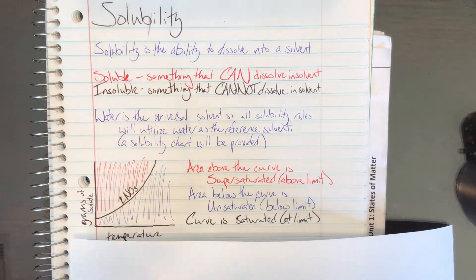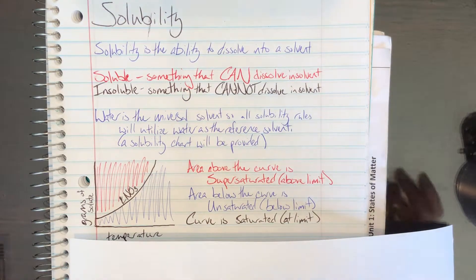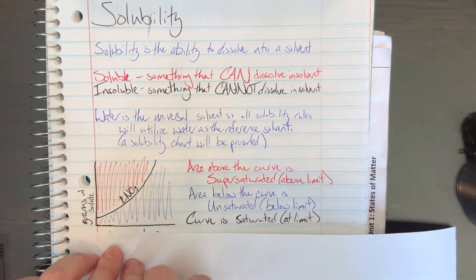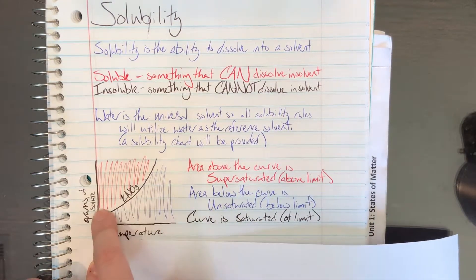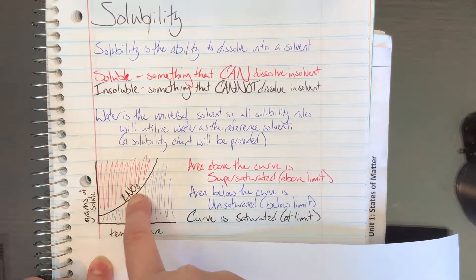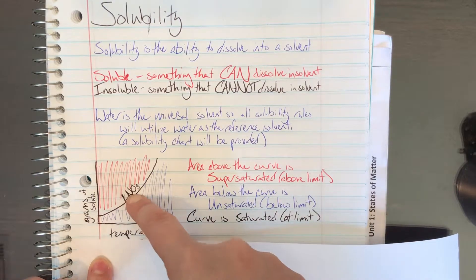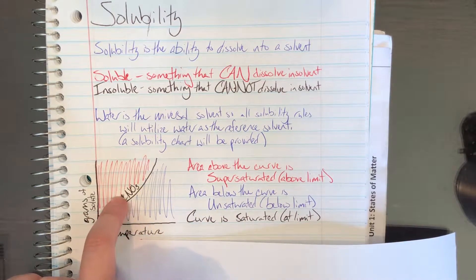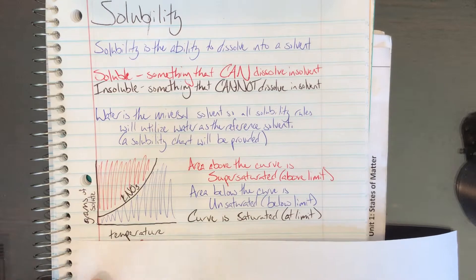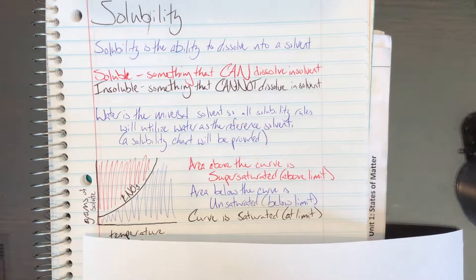Anything above this curve is called supersaturated. It's above the limit of what could actually be dissolved inside that solution. How we get something to be supersaturated is I could heat it up and dissolve this many grams of potassium nitrate, and then let it cool. As it cools, I'm suddenly supersaturated, and eventually it will precipitate out.